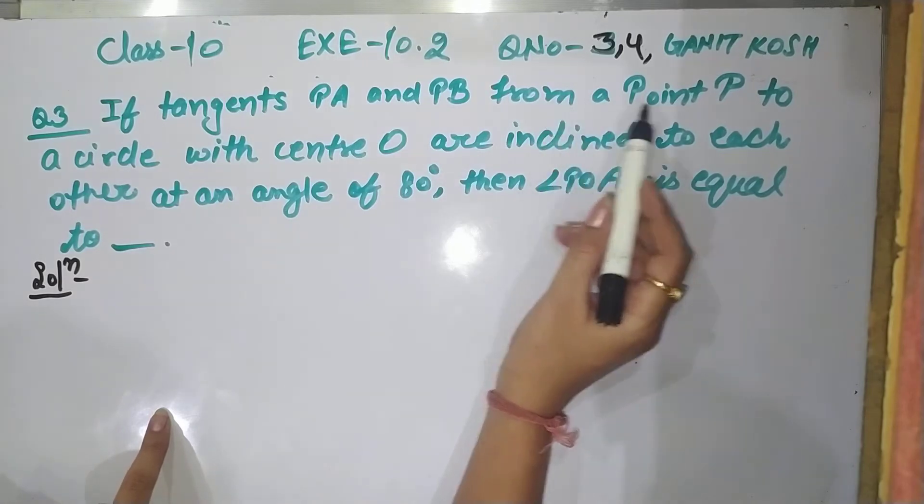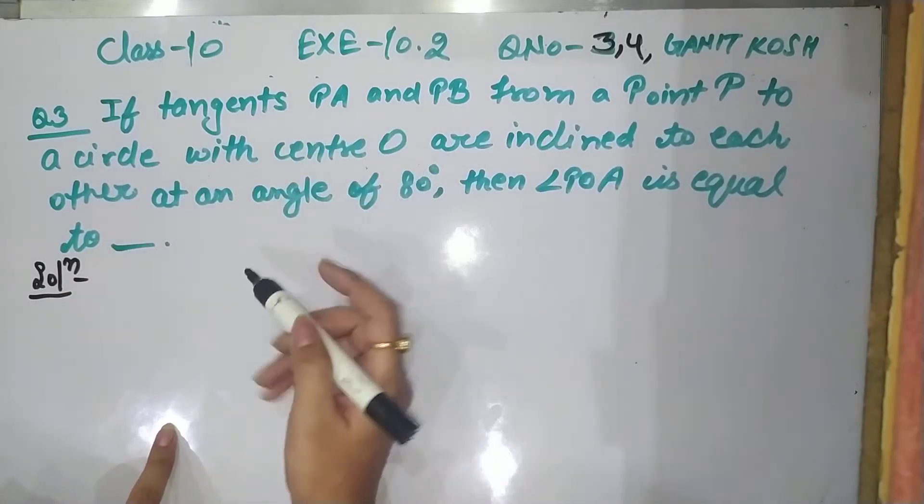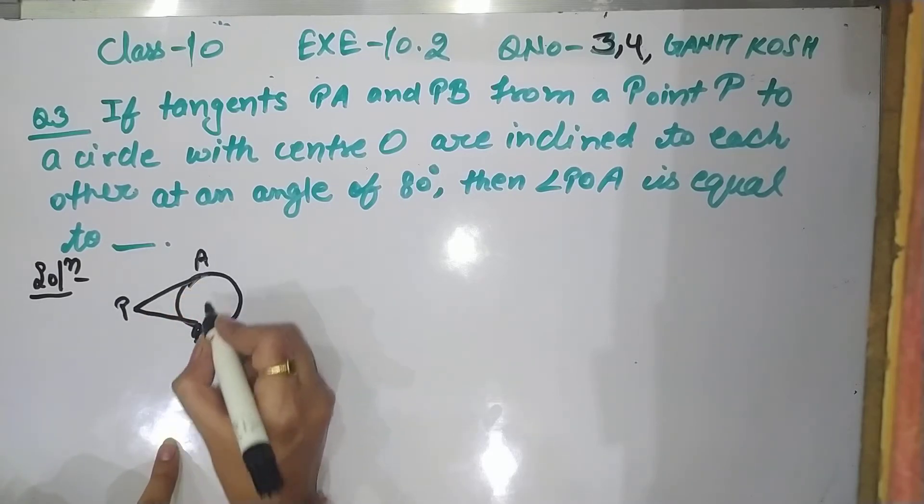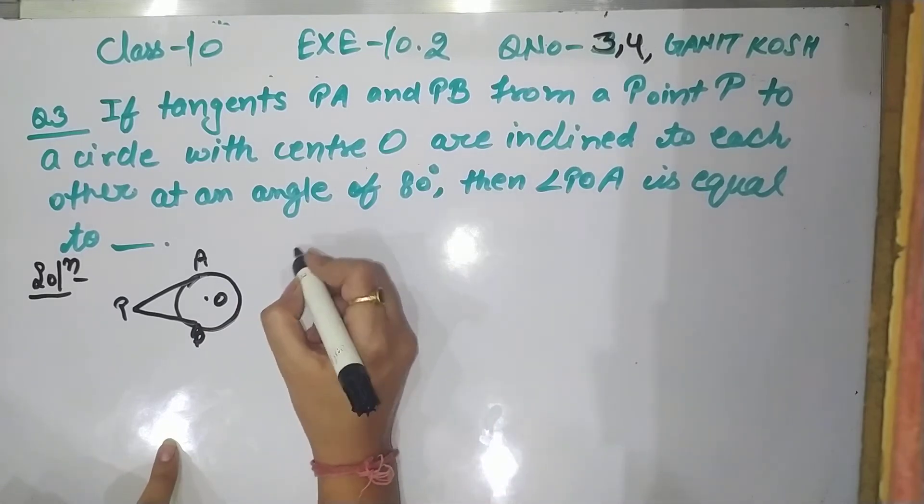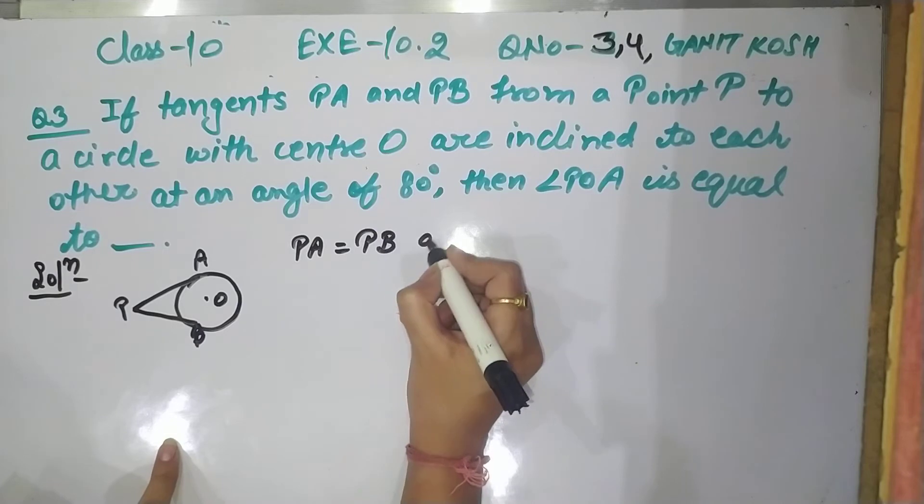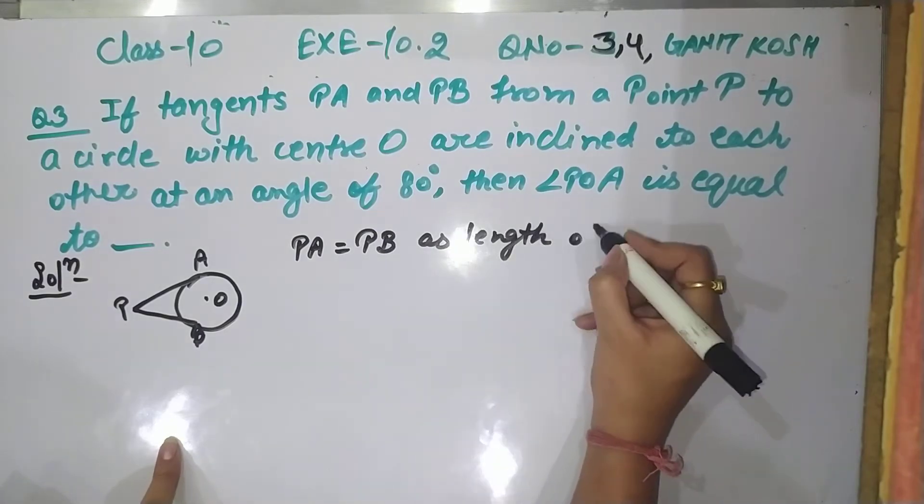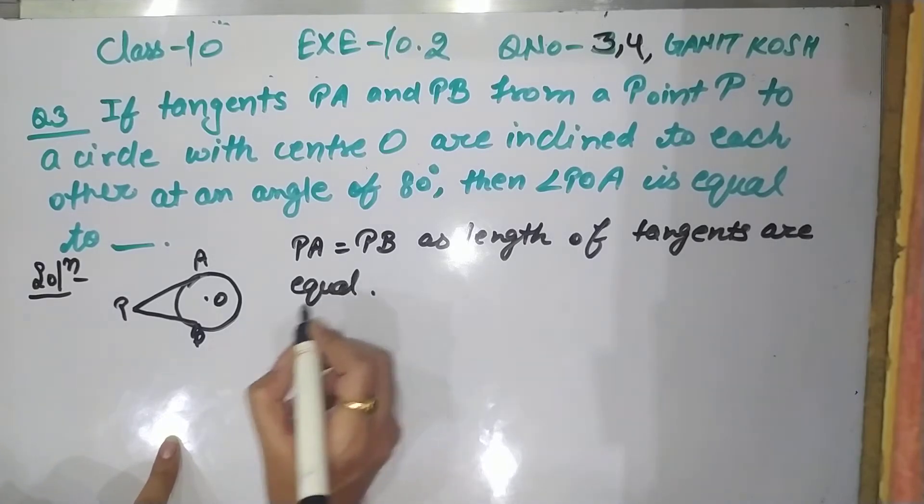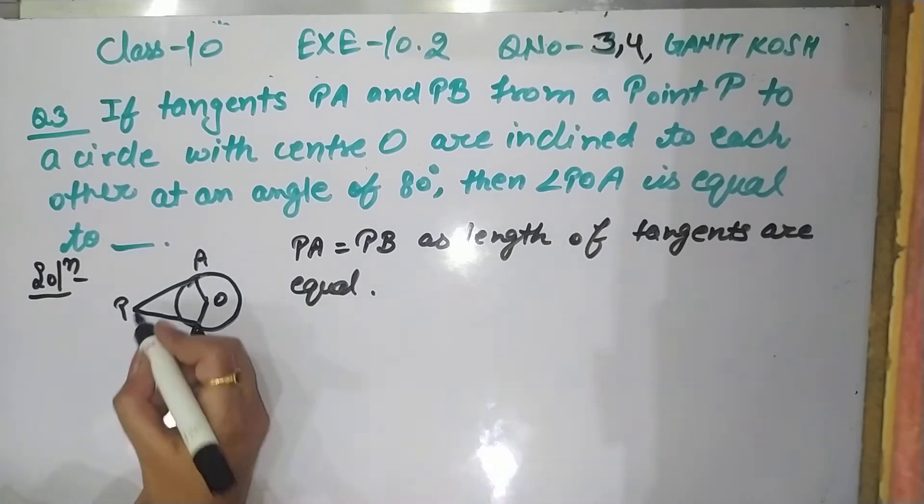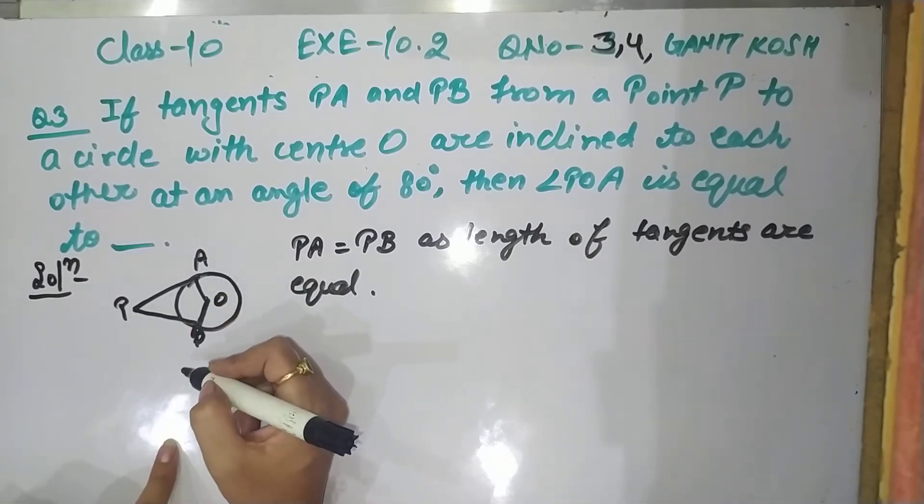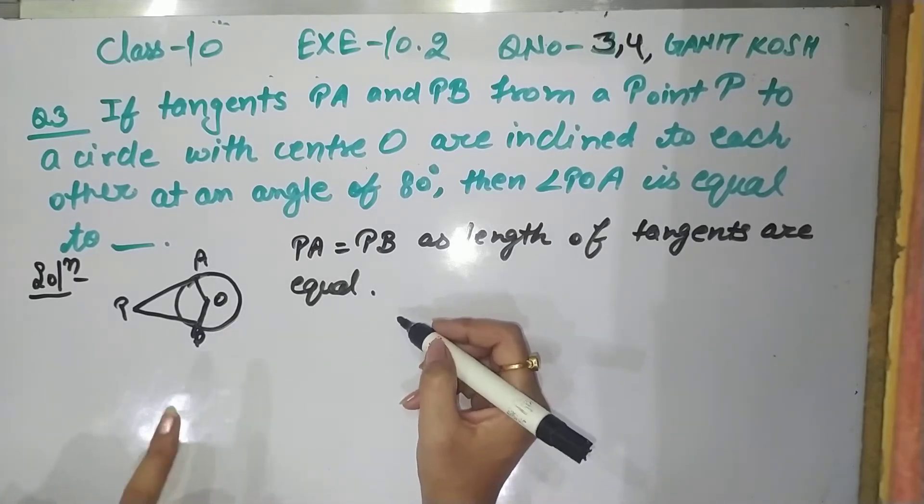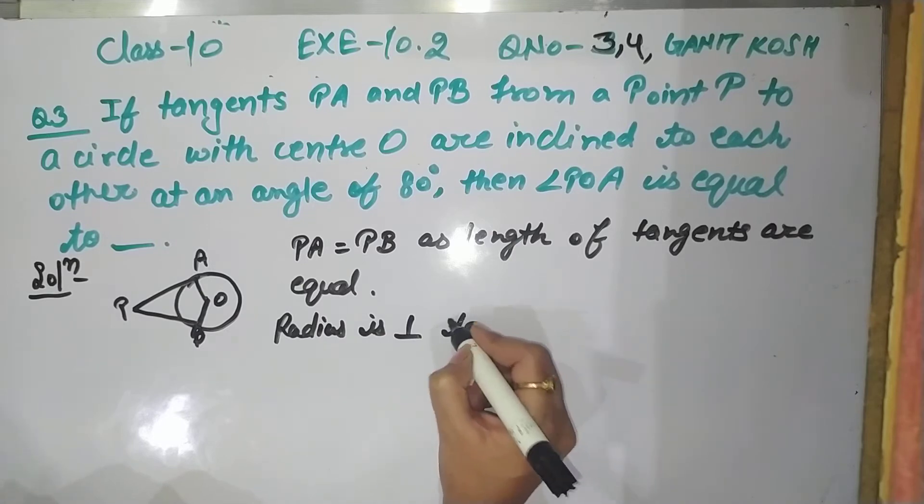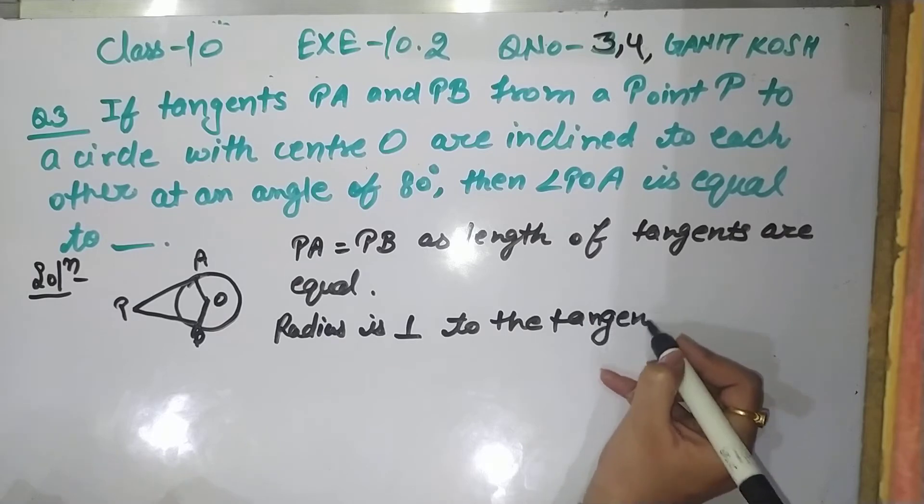PA and PB from a point P to a circle with center O, these are both tangents. We have a circle, and these are tangents. This is point P, A, B, center O. We will write PA is equal to PB as length of the tangents are equal. After that, we have a circle here and here. Join. Now we know this: radius is perpendicular to the tangent at point of contact.